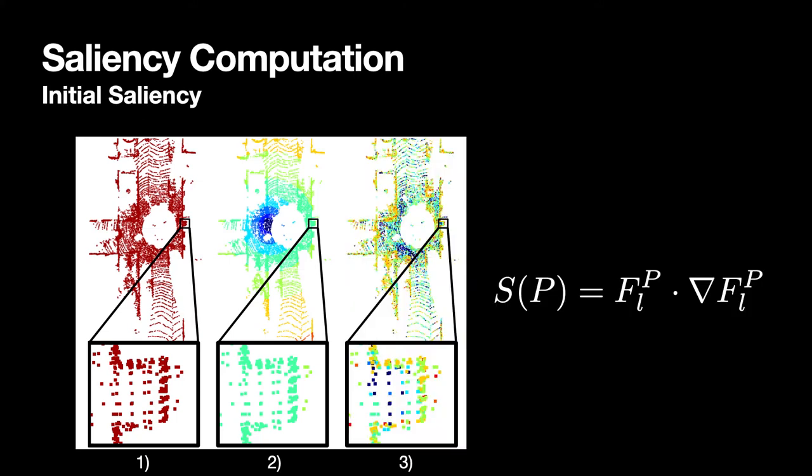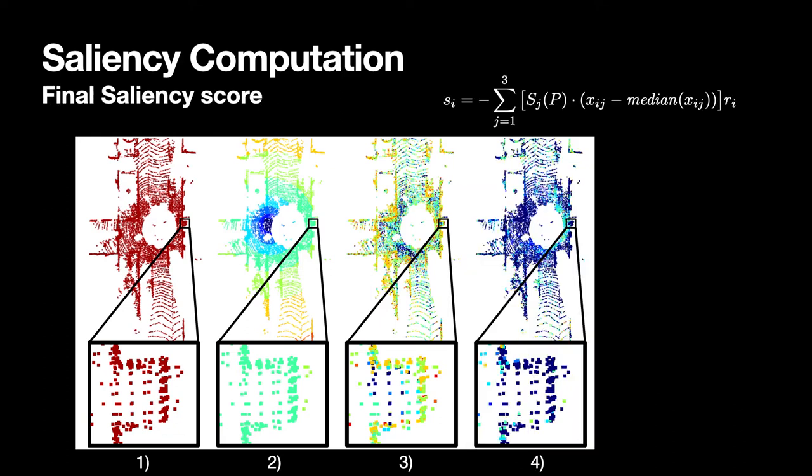Third, we compute the initial saliency score that assumes a pre-trained differentiable descriptor model is available. The saliency is defined as a product of two terms. The first one are the feature activations from a specific layer L of a network given the input point cloud P. The second term is the gradient of that layer L with respect to the input 3D locations of the points in the point cloud P. In subfigure 3, blue corresponds to negative gradients while red to highly positive.